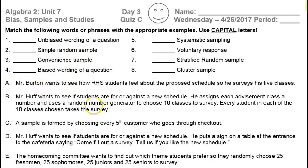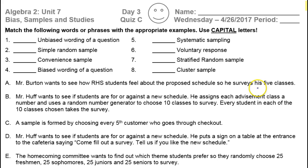I'll just go down the A, B, C, D part of it and then look up and see which one it was. So A — Mr. Burton wants to see how RHS students feel about the proposed schedule, so he surveys his five classes. Which sampling method does that sound like? That's going to be convenience. I just surveyed my classes because they're in the room. So that's convenience — that should have been number three.